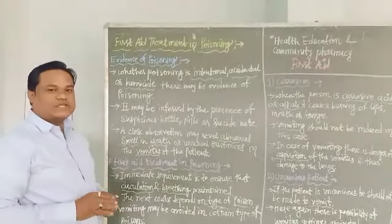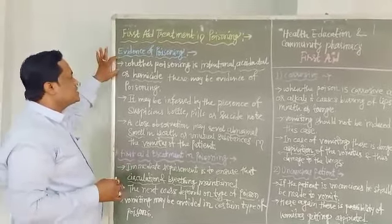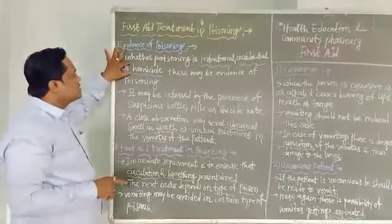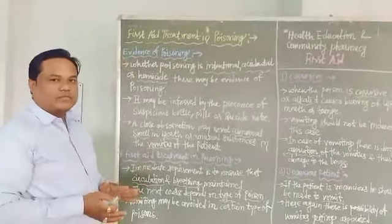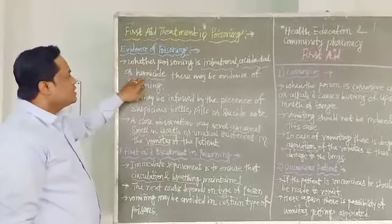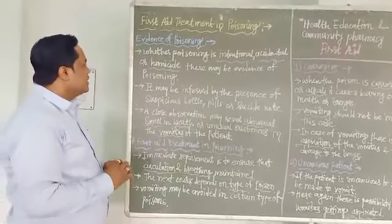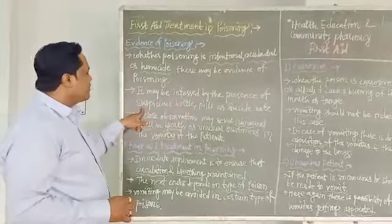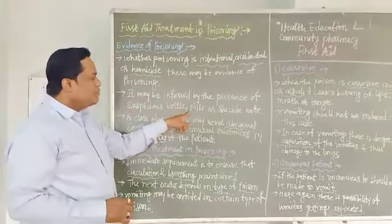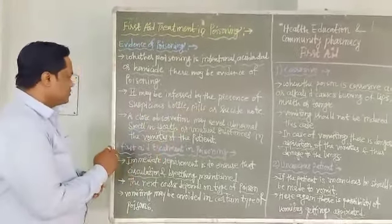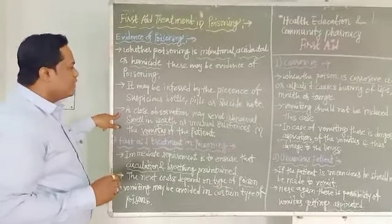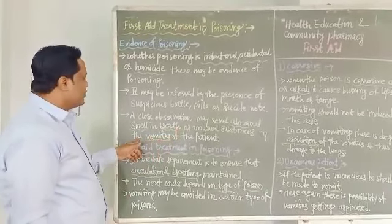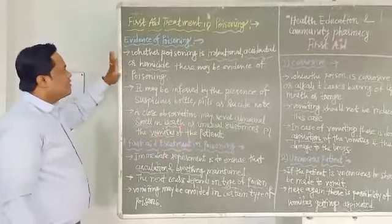First we will see what is evidence of poisoning. Evidence means whether the poisoning is first intentional, second accidental, or third homicide. Homicide means to kill a human being. There may be evidence of poisoning, which may be inferred by the presence of bottles, pills, or suicide notes. A close observation will reveal abnormal swelling, breath, or unusual substances in the vomit of the patient. This is the evidence of poisoning.